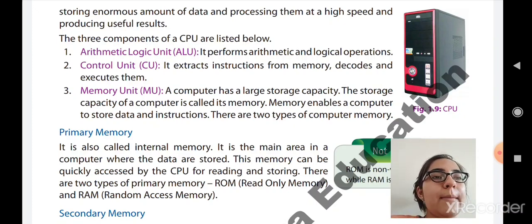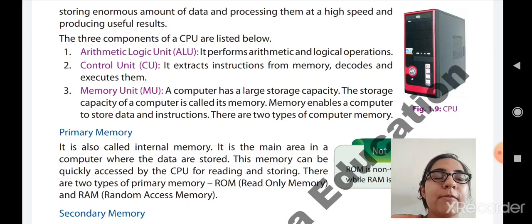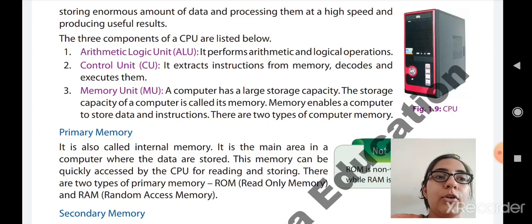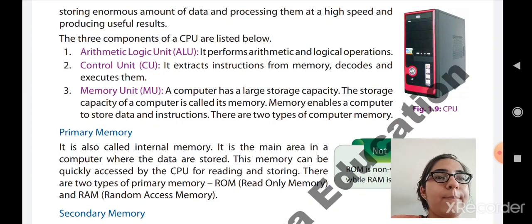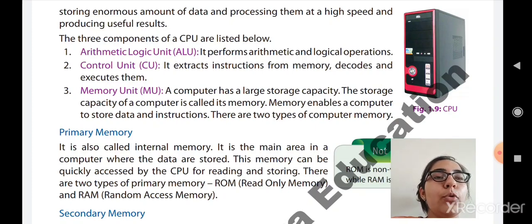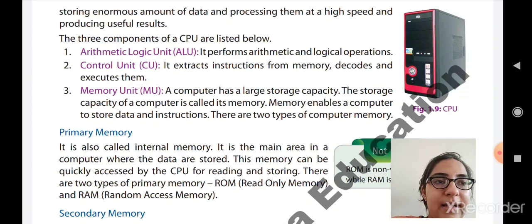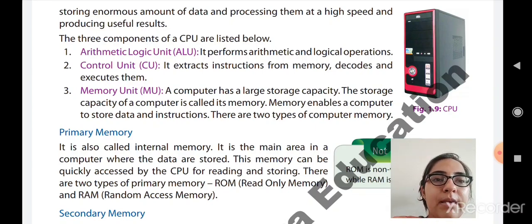There are two types of memory: primary and secondary. Primary memory itself is divided into two types. First is ROM — Read Only Memory — meaning you cannot write or edit the data stored in it. Second is RAM — Random Access Memory.